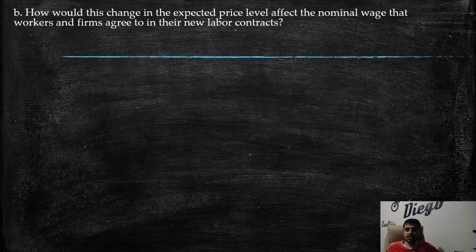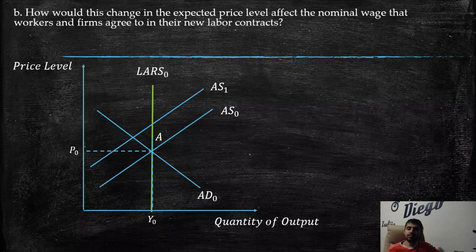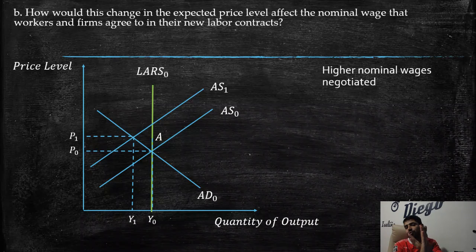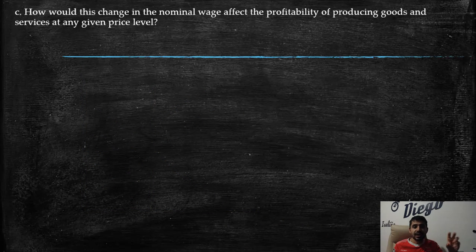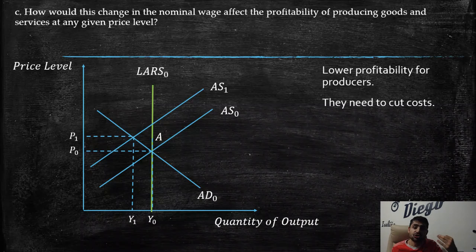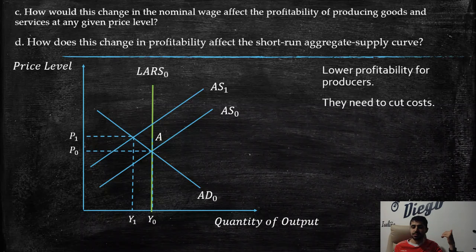Part b: How would this change in expected price level affect nominal wages in new labor contracts? Because the expectation of higher prices causes the aggregate supply to shift left, firms face higher nominal wages. Workers and unions negotiate better salaries and conditions. For producers, it becomes more difficult and expensive to hire workers. Part c: How does the change in nominal wages affect the profitability of producing goods and services at any given price level? Producers face lower profitability and need to cut costs, hiring fewer people.